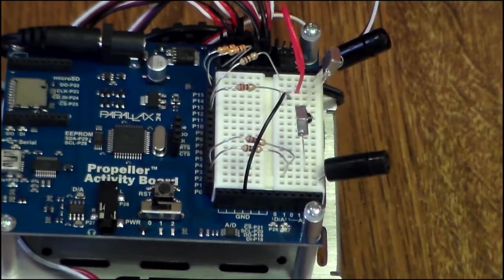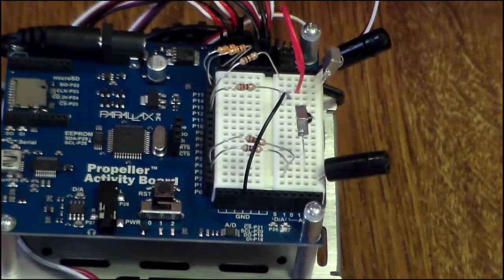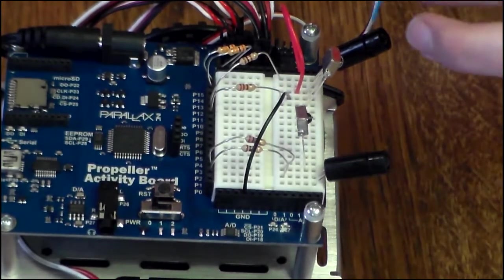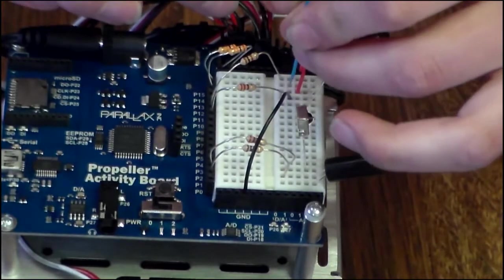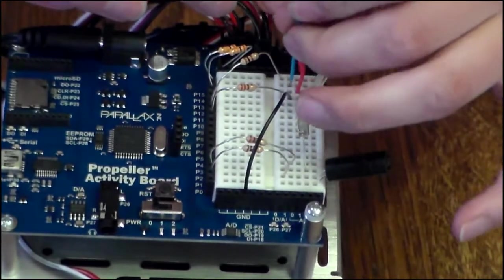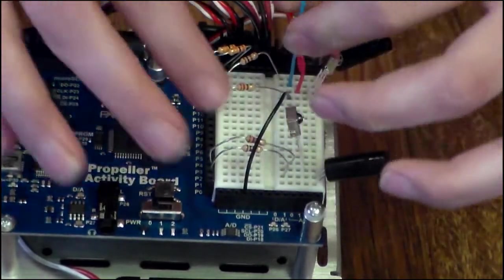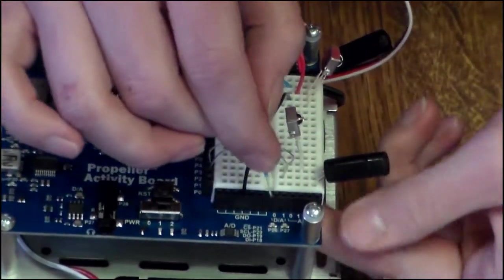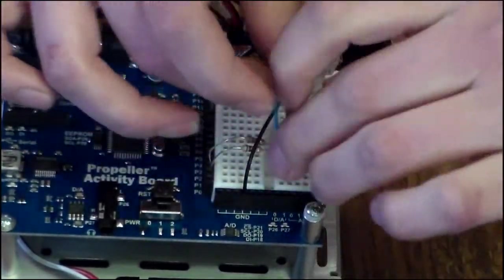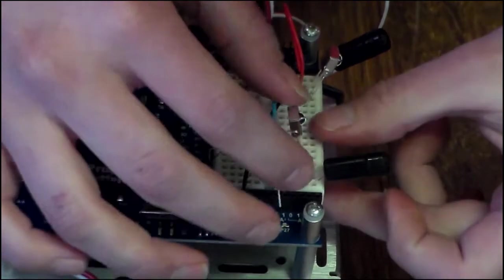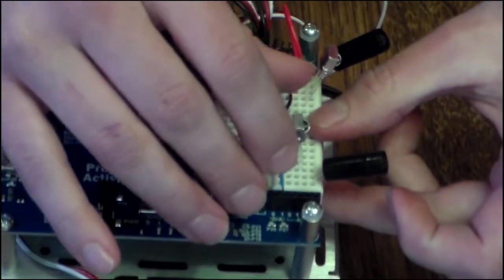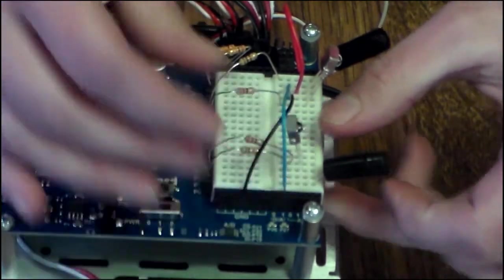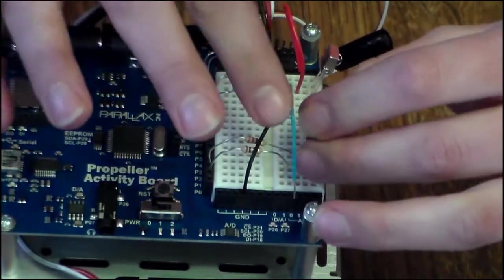Now we'll use a blue wire to connect to the digital analog switch and the LED sensor. So we'll run from the right pin of the LED sensor to the DA over here. And it doesn't matter if you plug it into the 0 or the 1. And then you'll repeat that process for the other side as well.